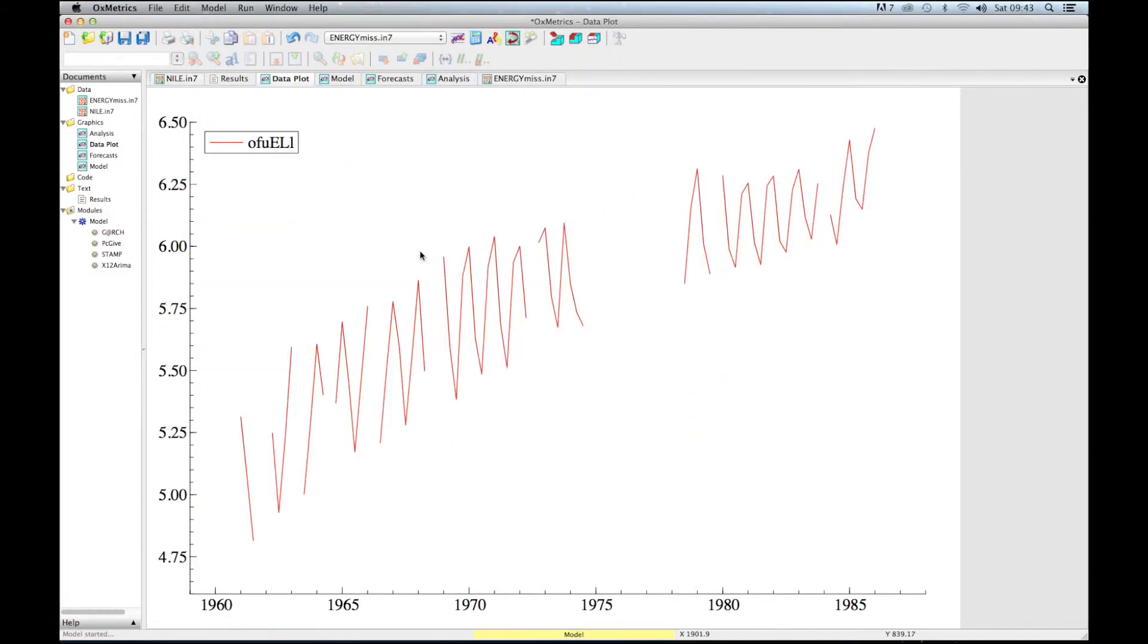Here you see a quarterly time series, yearly up to 1987, and then we have quarterly observations—four observations each year: one for quarter one, one for quarter two, up to quarter four. And then, as you can see, there are some missing data.